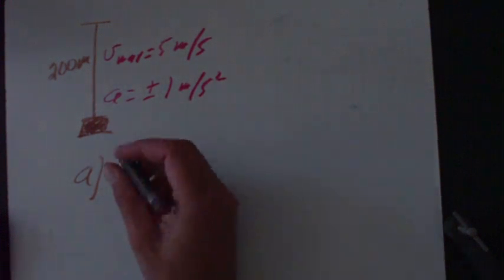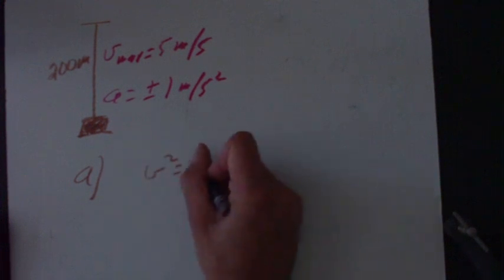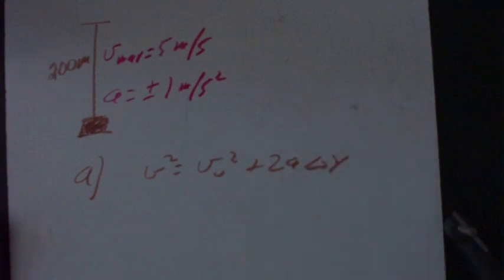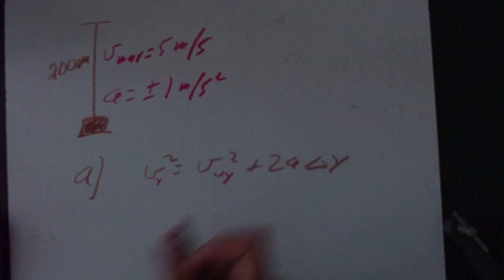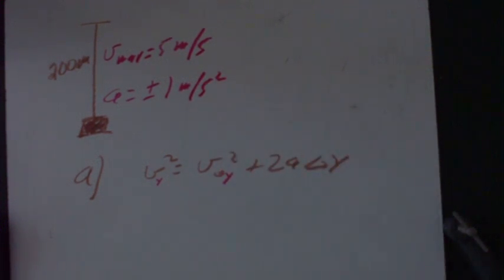Now that can be found by using one of the equations that we have, in particular that v squared is v naught squared plus 2a times delta y. There's a lot of variations of this equation, but we'll put the delta y in there because we're referring to vertical motion. So this equation will tell us how much distance the elevator requires to make that five meters per second.